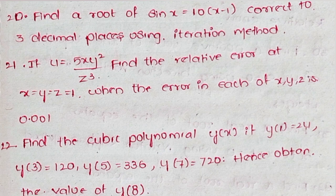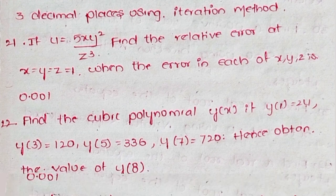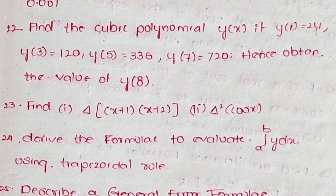Question 20: Find a root of sin(x) = 10(x-1) correct to three decimal places using iteration method. Question 21: If u = 5xy²/z³, find the relative error at x = y = z = 1 when the error in each of x, y, z is 0.001. Question 22: Find the cubic polynomial y(x) if y(1) = 24, y(3) = 120, y(5) = 336, y(7) = 720, hence obtain the value of y(8).